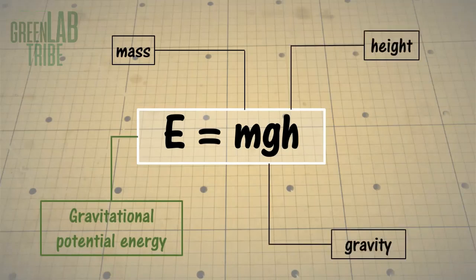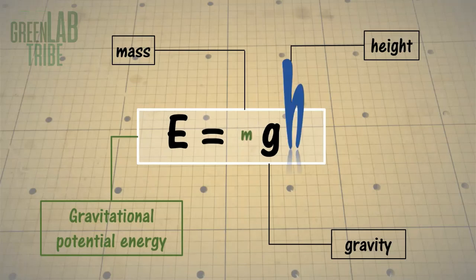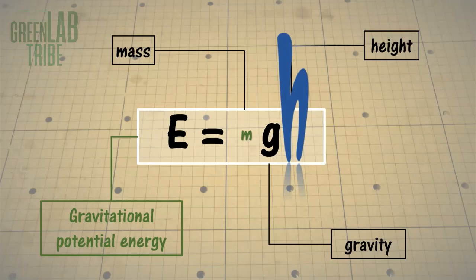Gravity is constant, at least here on Earth, so we can have the same amount of energy with a small mass and a big height or a big mass and a small height.